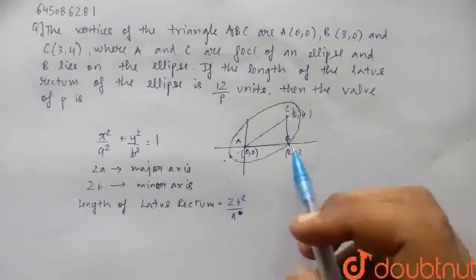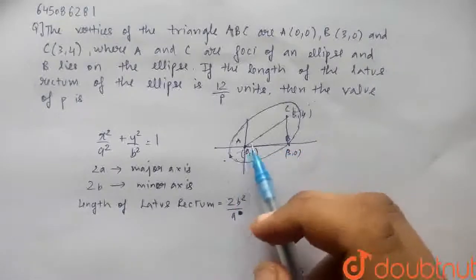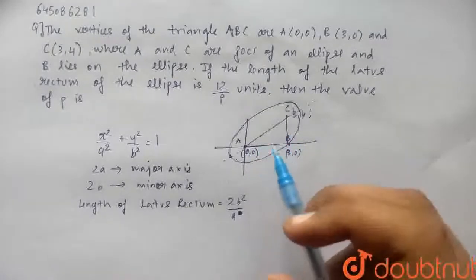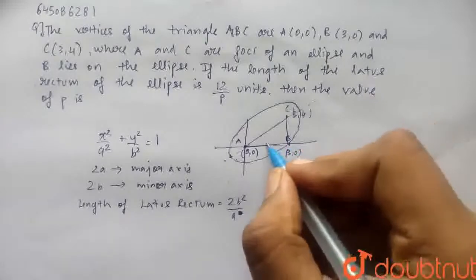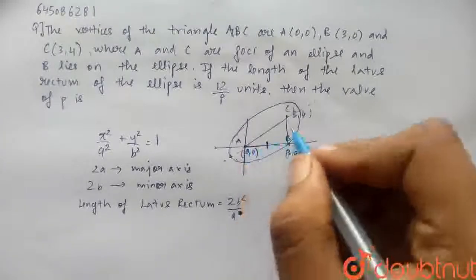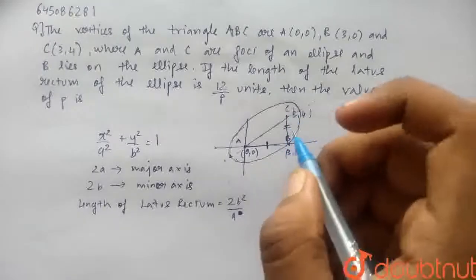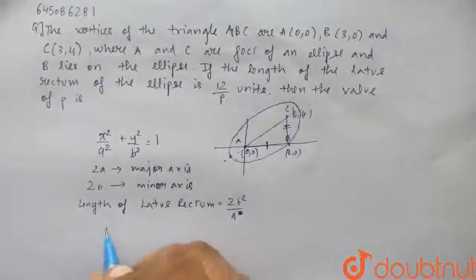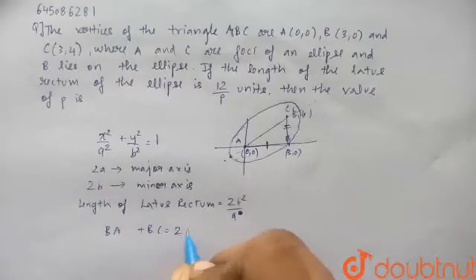Now, there is an important property of the ellipse that the sum of the distance of any point of the ellipse from both the foci is equals to the major axis. Basically, the distance B lies on the ellipse, so therefore the distance from one foci plus the distance from B to another foci equals 2a, which is the major axis. So I will write here BA plus BC is equals to 2a.